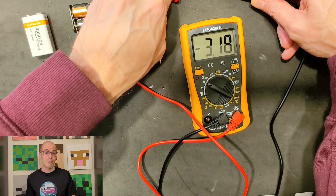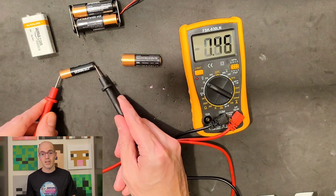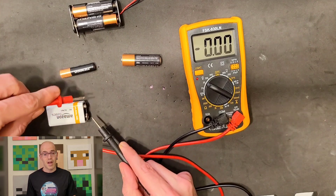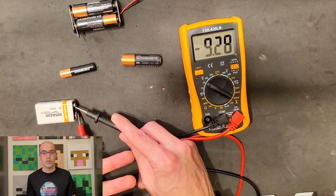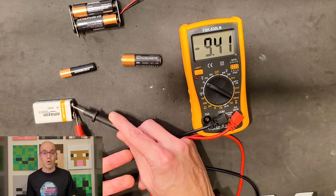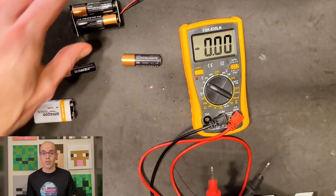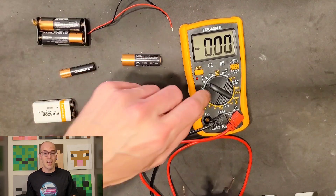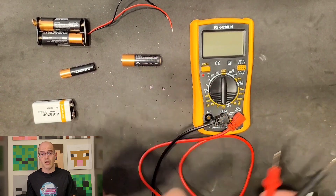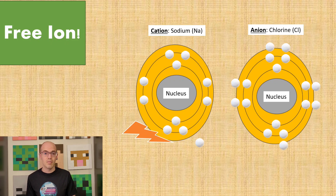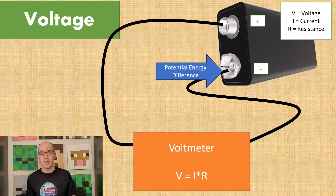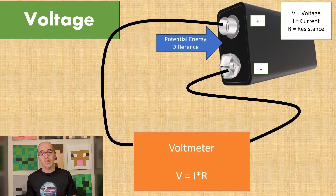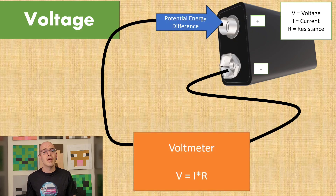In the case of electrolytes, which contain free ions, a similar principle applies. When a voltage is applied across an electrolyte, the free ions experience a force due to the electric field. Positive ions, or cations, are attracted towards the negatively charged electrode (cathode), while negative ions, or anions, are attracted towards the positively charged electrode (anode). This movement of ions constitutes an electric current. In summary, voltage provides the energy necessary to overcome the resistance of a conductor and drive the movement of electric charges, whether electrons in metallic conductors or ions in electrolytes.